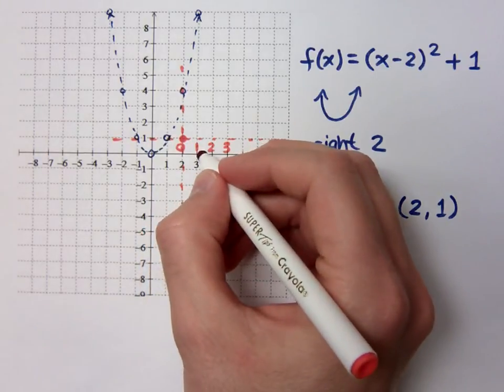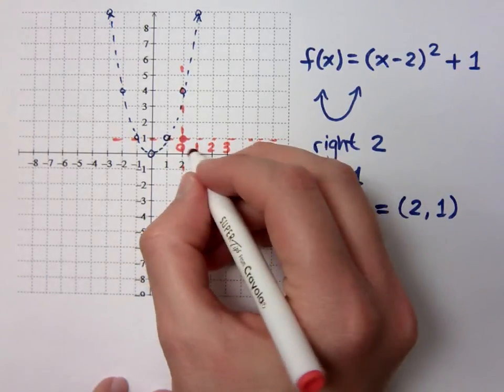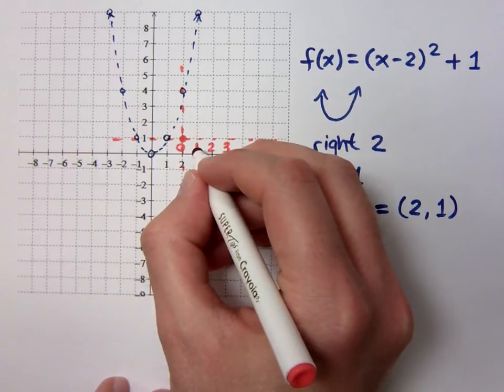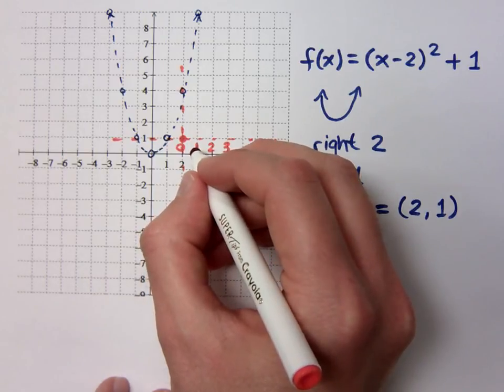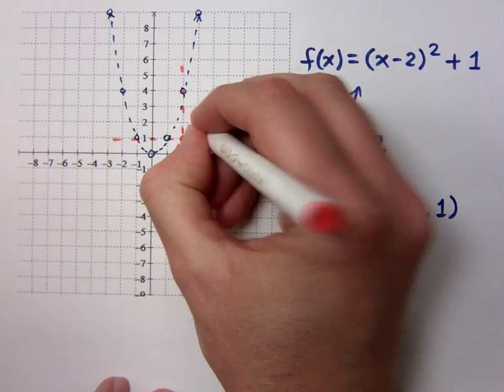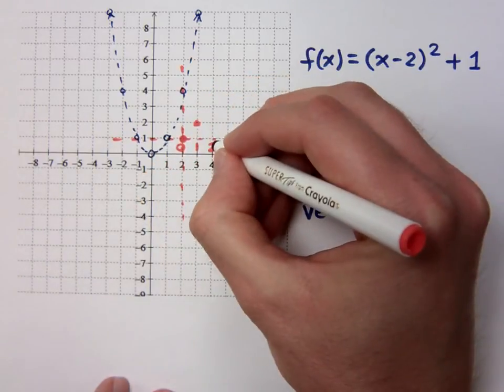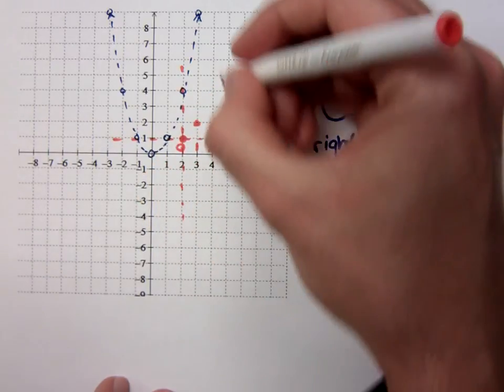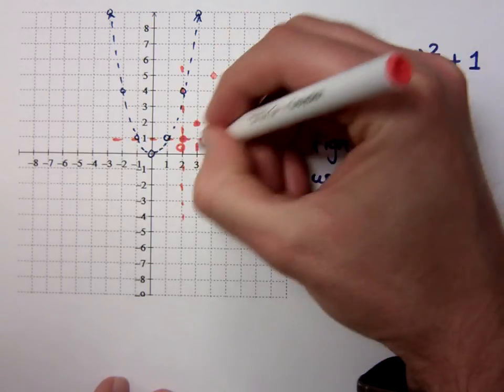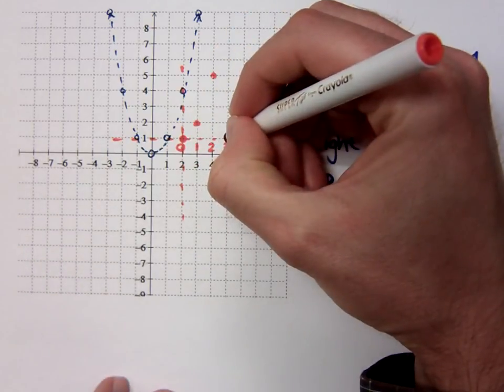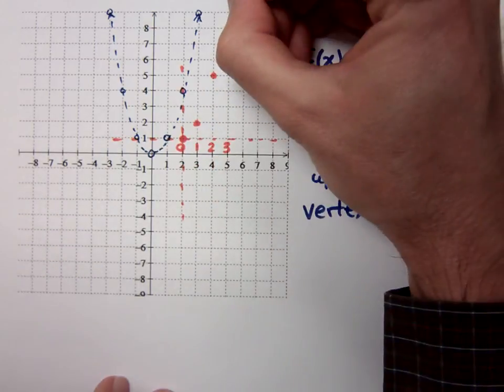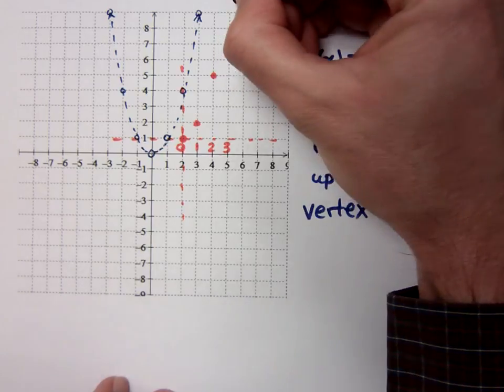My function is the squaring function. Now, this is where I do the algebra. What's 1 squared? Which means from that new horizontal line that I drew, I'm going to be up 1 unit. What's 2 squared? 4, so I'm up 4 units from this guy. What's 3 squared? 9, which means I'm off the graph a little bit somewhere up here. Do you all agree?